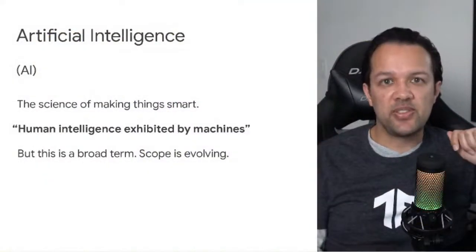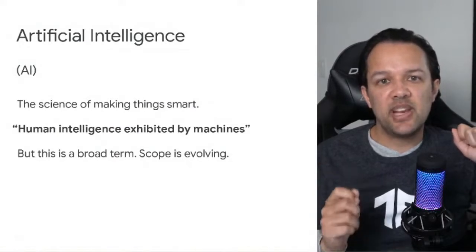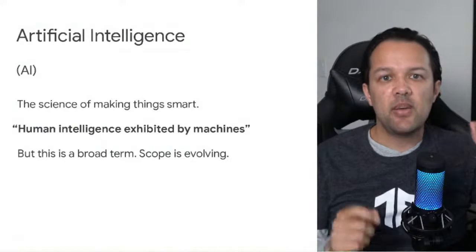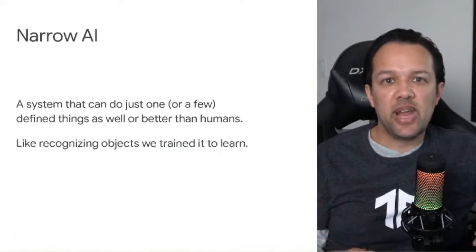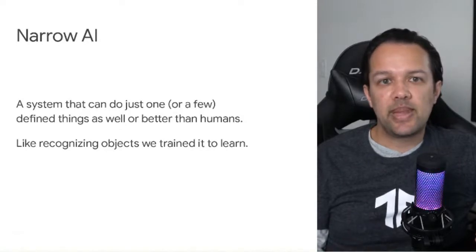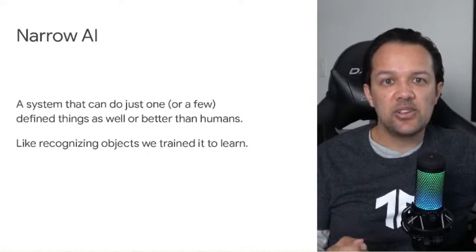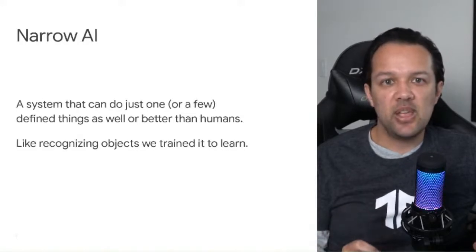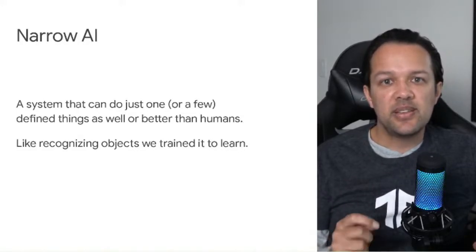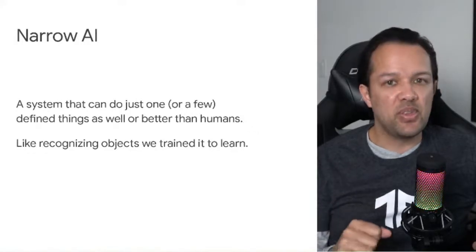First up, artificial intelligence, or AI for short, is essentially defined as human intelligence exhibited by machines. But this is a very broad term. We're actually at a point in time where we typically work with narrow AI. All that means is that these systems can do one or a couple of things as good or better than a human expert in that area, like recognizing objects. A great example of that is in the medical industry, where doctors use AI systems to help them identify issues in the grainy images that come back from scans of a human body.